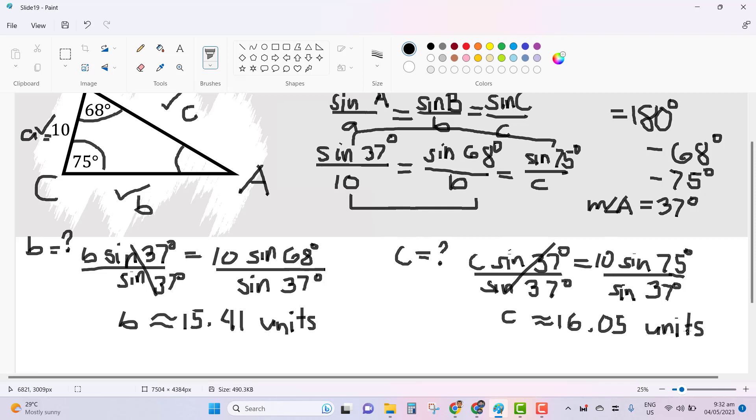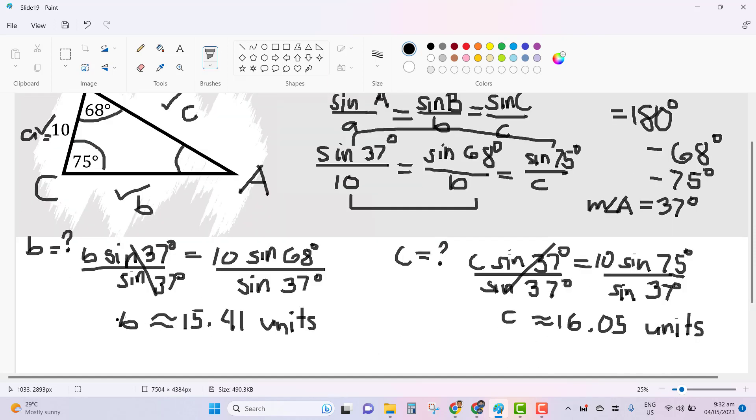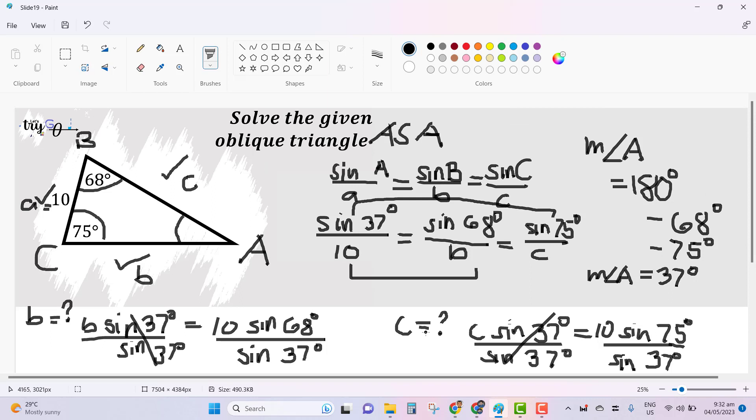These are the three unknown measurements for this given oblique triangle. We have the measurement of angle A, 37 degrees, B is 15.41, and C is 16.05 in units. One thing you could use here is the concept of the relationship between the angle measurement and its opposite side measurement.